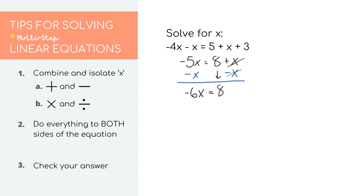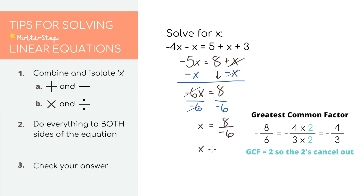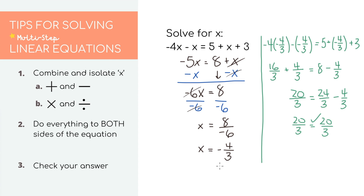To get rid of negative 6 times x, we divide by negative 6 on both sides. We're left with x equals 8 over negative 6. Let's always simplify our fractions — the GCF is 2, so the simplified fraction is negative 4 over 3. Checking our answer by plugging the value back in, we know we have the right answer.